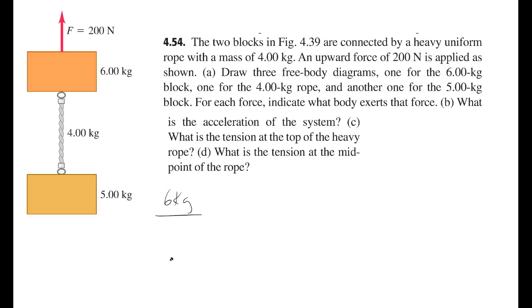Starting with the 6-kilogram block, I'll draw a dot to represent its center of mass. At the very top it feels force F acting straight up. Because we're on Earth, we have weight M1G pulling down. And then below it, the rope pulls down — I'll call that FT1, the tension at the top part of the rope. There's no normal force and no friction since it's not in contact with a surface. So those three forces make up the free-body diagram.